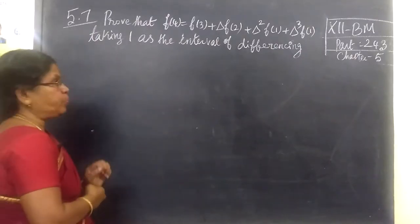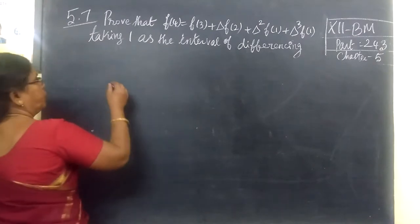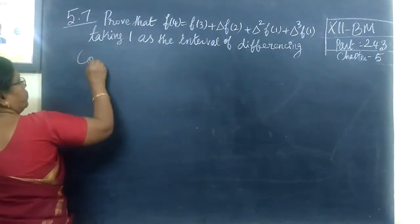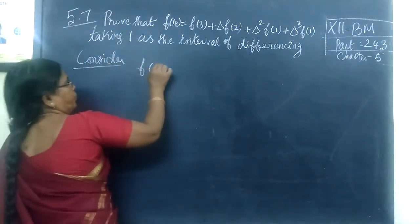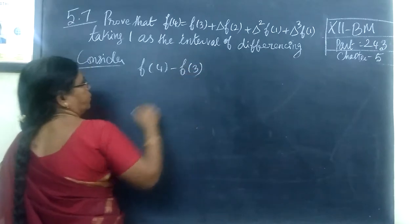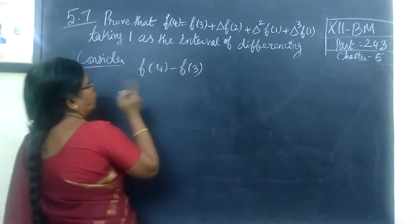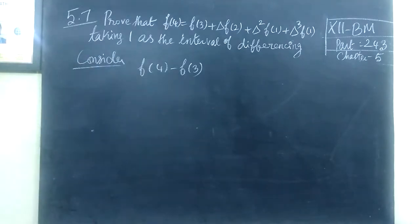Example 5.7: Prove that F4 is clear. Consider F4 minus F3. F4 minus F3 — is the question correct?